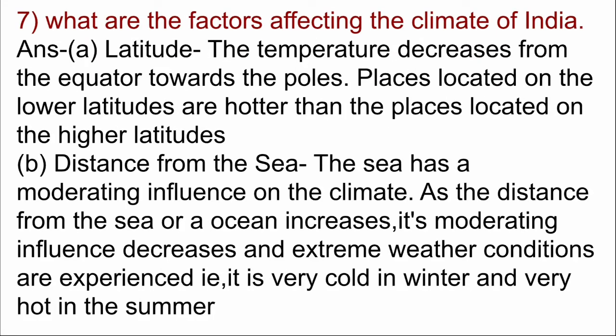What are the factors affecting the climate of India? Latitude: The temperature decreases from the equator towards the poles. Places located on the lower latitudes are hotter than the places located on the higher latitudes. Next, distance from the sea: The sea has a moderating influence on the climate. As the distance from the sea or ocean increases, its moderating influence decreases and the extreme weather conditions are experienced — that is, it is very cold in winter and very hot in the summer.